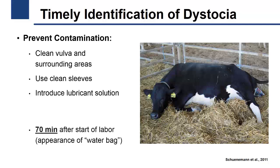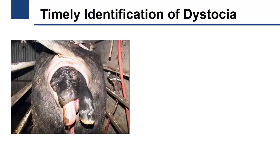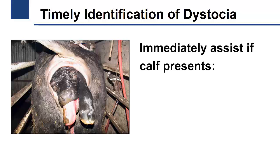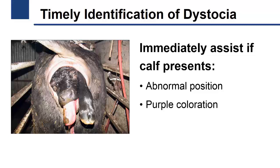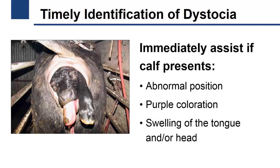If after 70 minutes from the start of labor there is still no progress, restrain the cow and follow the farm's SOPs to properly assist the cow. Immediately assist the cow if the calf presents an abnormal position, purple coloration, and/or swelling of the tongue and head. Also, a calf that experienced a stressful calving might present yellow coloration resulting from defecation of the first feces, known as meconium, inside the uterus — in this case, immediate assistance is required as well.